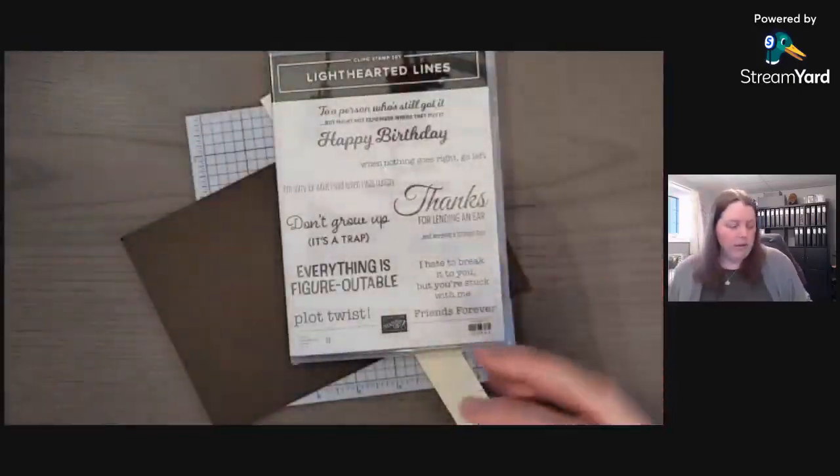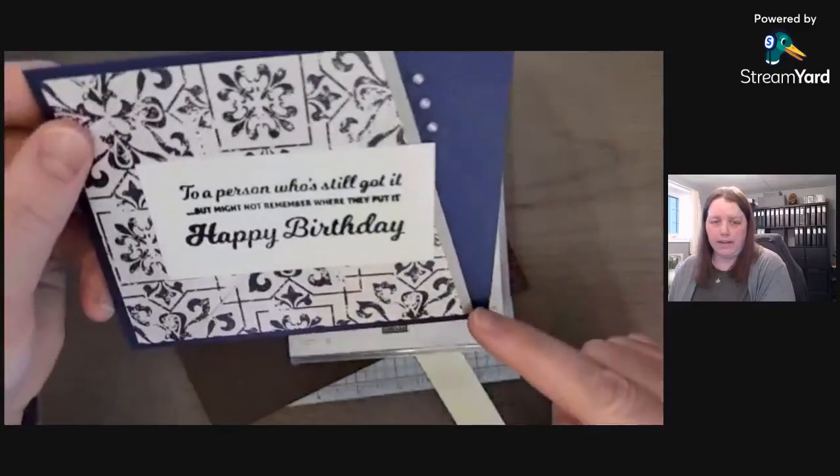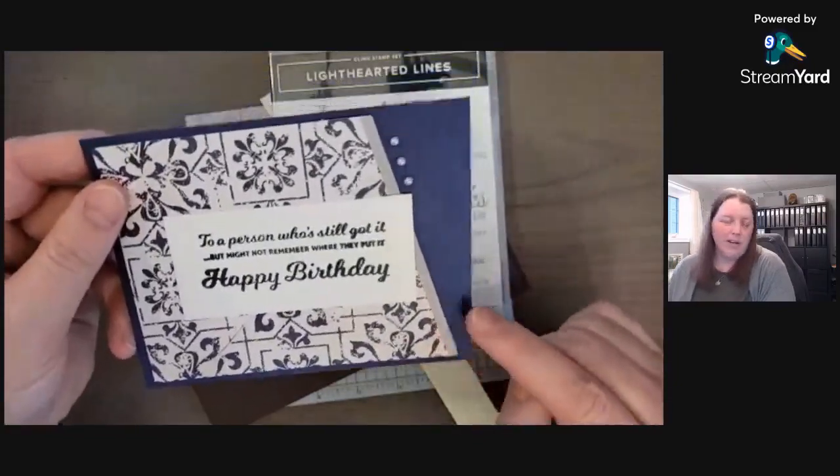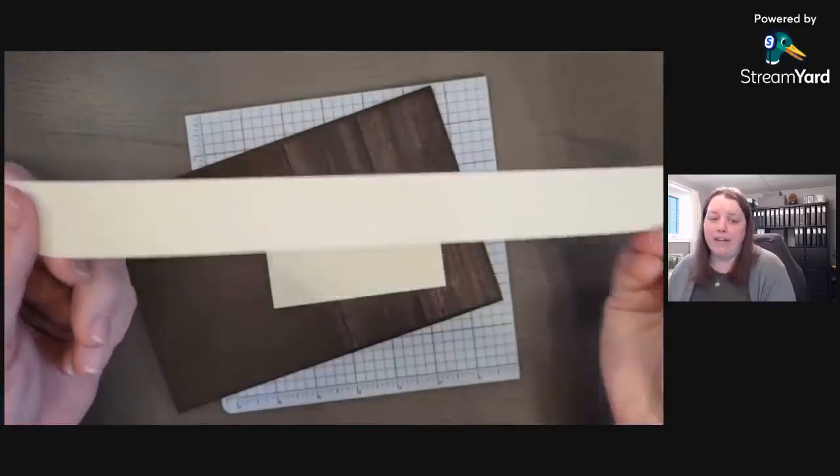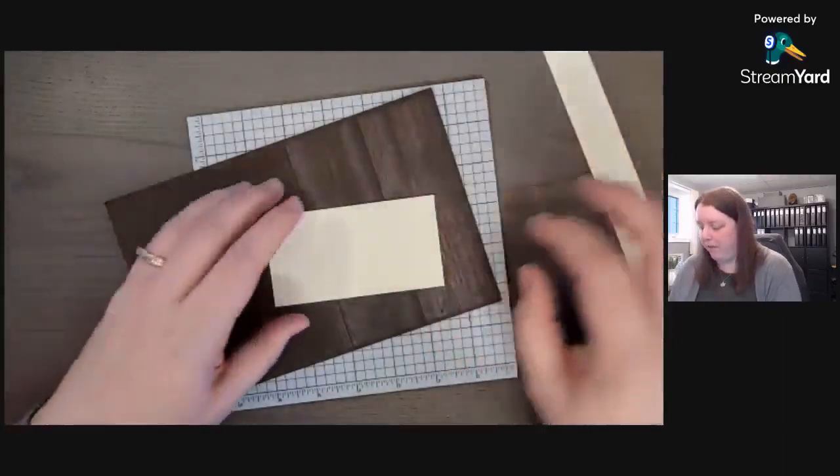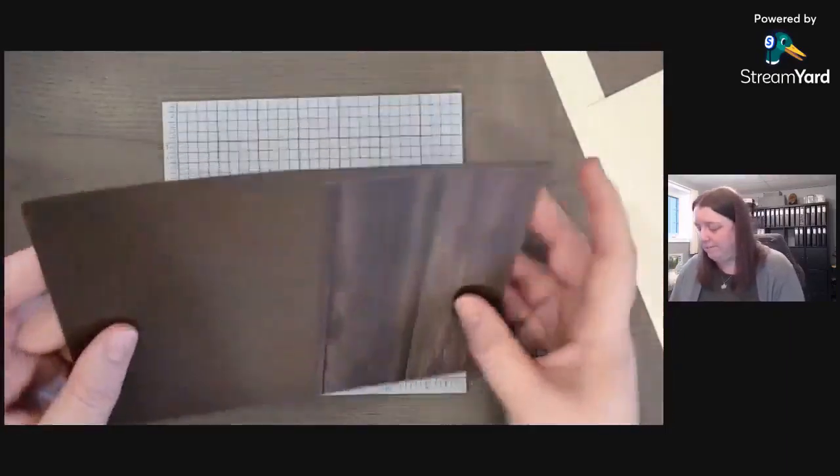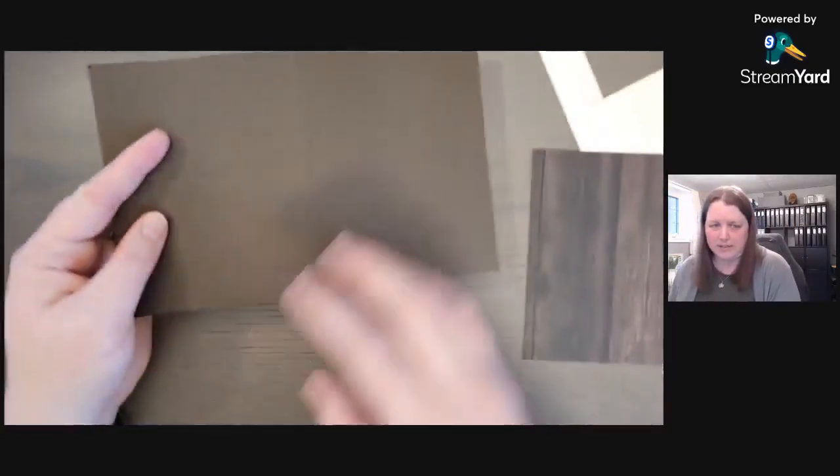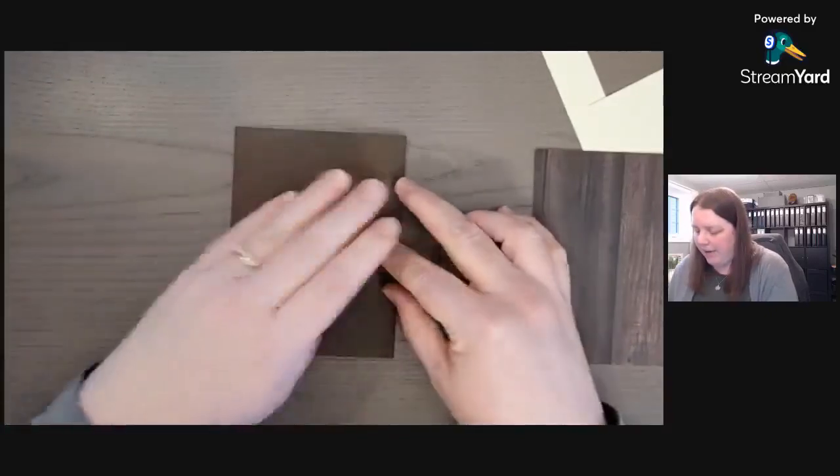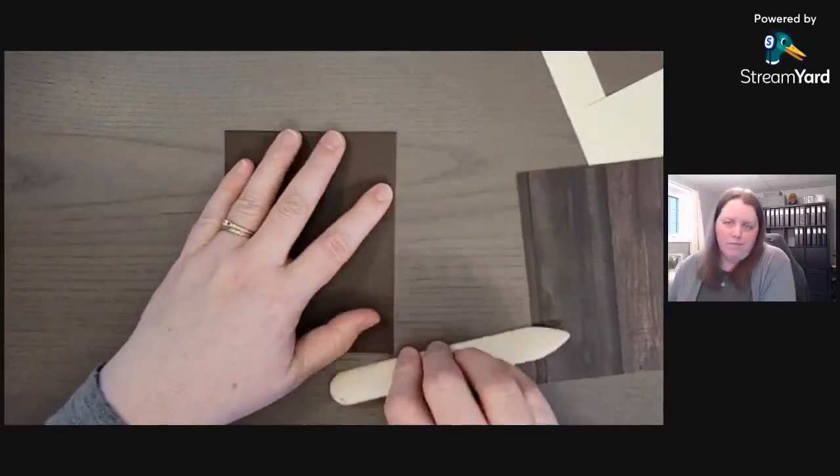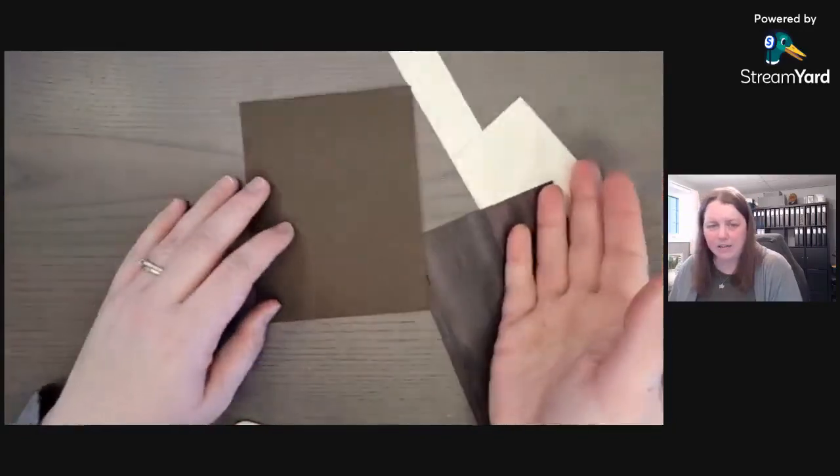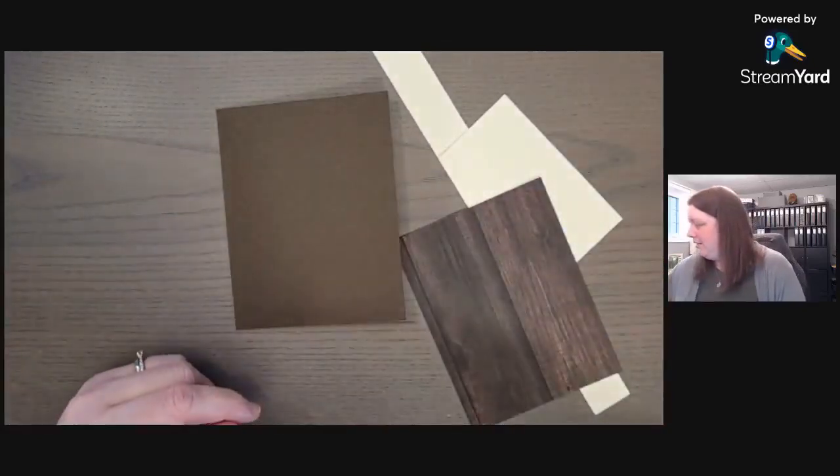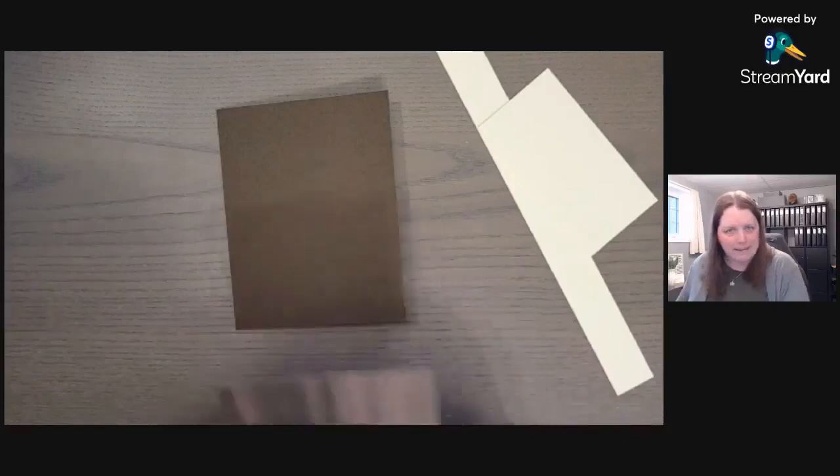I'll show you how I did the little edge. The stamp set is Very Vanilla. I hardly use Very Vanilla—I use Basic White most of the time. I used to use Early Espresso, which this is, all the time, and now I don't. Very Vanilla, I have so much of it. Are you a Very Vanilla or a Basic White fan? I'd love to know—drop me a comment.